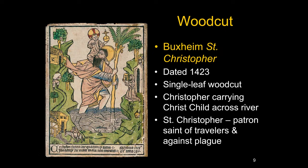This single-leaf woodcut is known as the Buxheim Saint Christopher — Buxheim is just where it's from, used to distinguish this image from other pictures of Saint Christopher. It is dated 1423, and it shows a picture of Saint Christopher carrying the Christ child across the river.